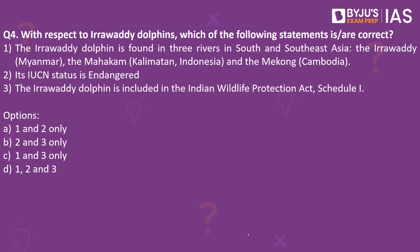Now let's look into the next practice question. With respect to Irrawaddy dolphins, which of the following statements is or are correct? The Irrawaddy dolphin is found in three rivers in south and southeast Asia — the Irrawaddy, the Mahakam, and the Mekong. Its IUCN status is endangered. The Irrawaddy dolphin is included in the Indian Wildlife Protection Act Schedule 1. The answer to this is 1, 2 and 3.